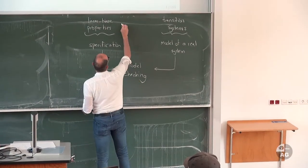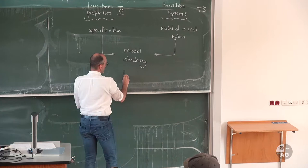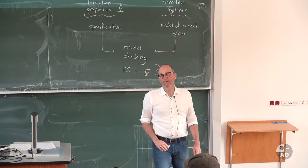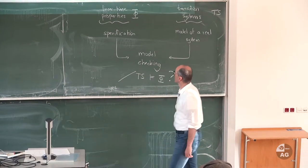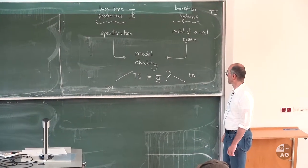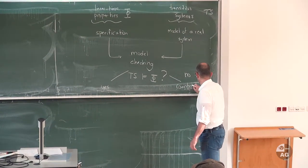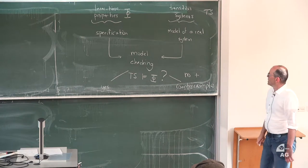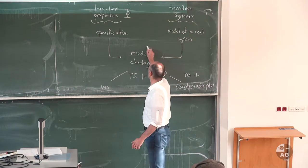So if this is a property, let's say phi, if this is a transition system TS, model checking is going to check whether TS satisfies phi or not. There are two possible outcomes: either it says yes, the transition system satisfies your linear time property, or it says no — the transition system does not satisfy the property — and then you would like to have something like a counter example. So what we are going to do today is we are going to see the very first elementary simple model checking algorithm.